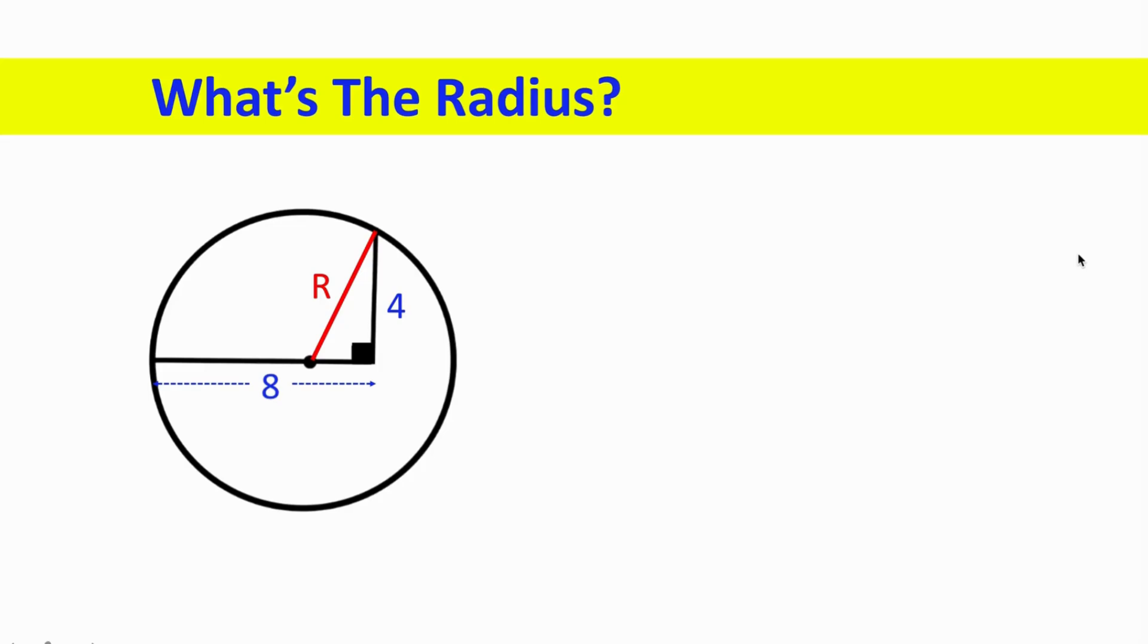Hello everyone. We are going to solve this geometry puzzle to find the radius of this circle. The only information is that the length of this horizontal line is 8 units and the vertical line is 4 units.